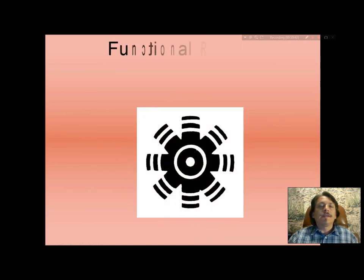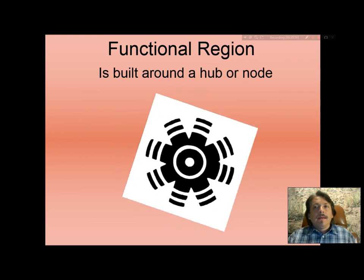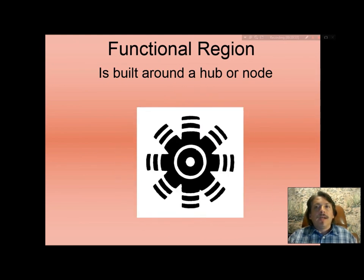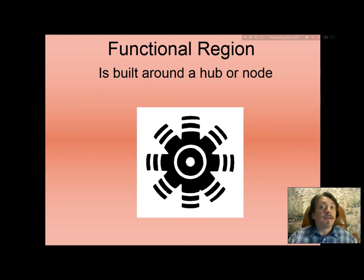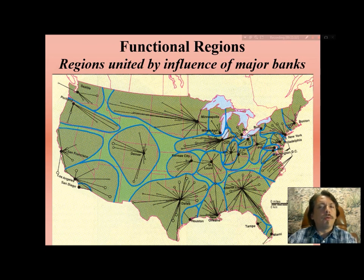Let's address the definition of a functional region. It is a region networked to a center point — not necessarily the mathematical center — built around a hub or node, like the spokes of a wagon or bicycle wheel. In this example, regions of the United States have urban areas with major banks.